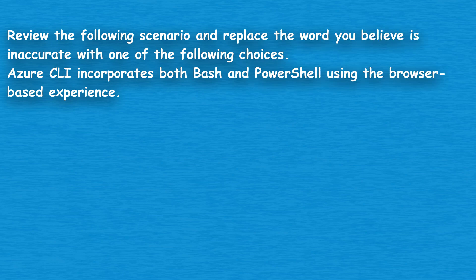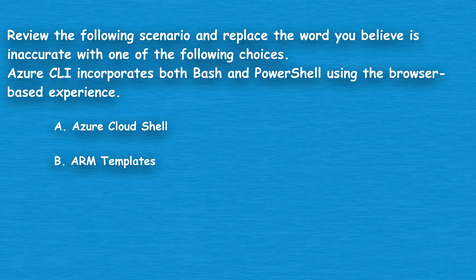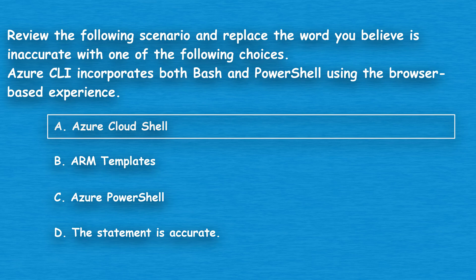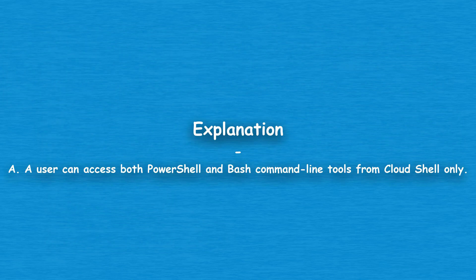The next question: review the following scenario and replace the word you believe is inaccurate. Azure CLI incorporates both Bash and PowerShell using the browser-based experience. Option A: Azure Cloud Shell. Option B: ARM Templates. Option C: Azure PowerShell. Option D: The statement is accurate. The correct answer is Option A, Azure Cloud Shell. A user can access both PowerShell and Bash command-line tools from Cloud Shell only.